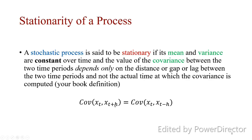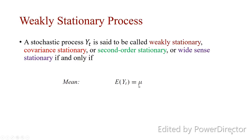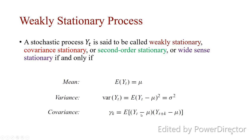A stochastic process y_t is said to be weakly stationary, covariance stationary, second-order stationary, or wide-sense stationary — these are all synonyms. This means: the mean is equal to a constant (not a function of time), the variance equals sigma squared (also not a function of time), and the covariance between y_t and y_{t+k} is only a function of the time lag k. Taking the absolute difference |t - (t+k)| = k, the covariance is a function of k only.